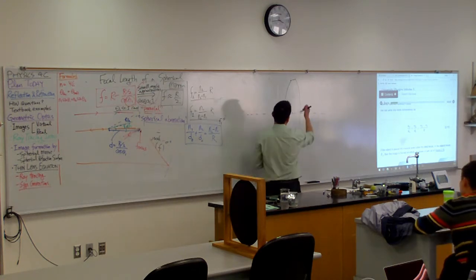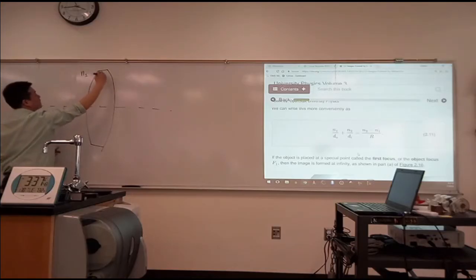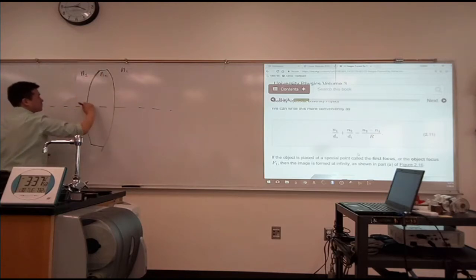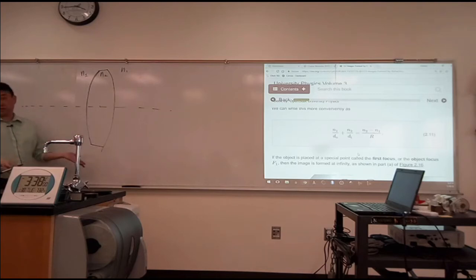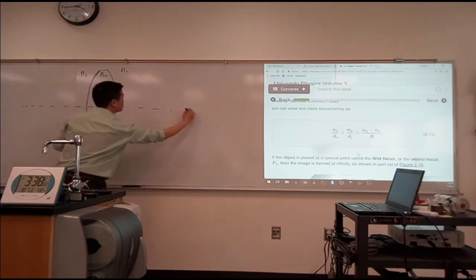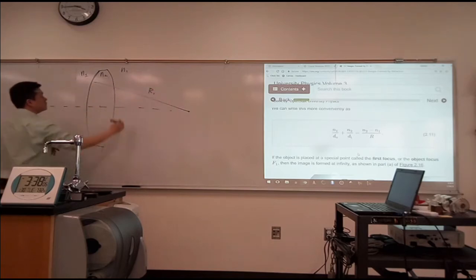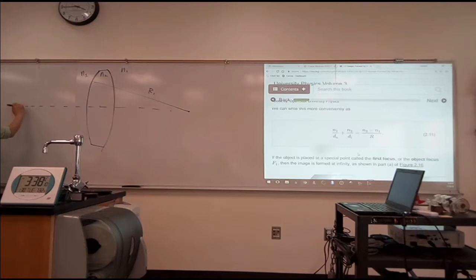So you have index of refraction N1 outside, index of refraction N2 inside, and index of refraction N1 outside again. And these curved surfaces, they are at some radius of curvature. You can imagine that this is the center, and this is the radius of curvature R1, and for this, here's the center, and this is the radius of curvature R2.